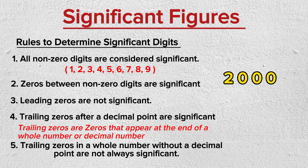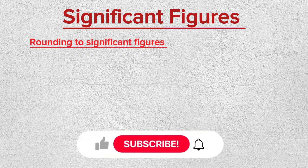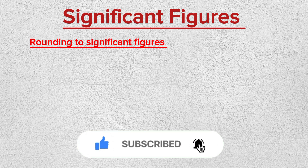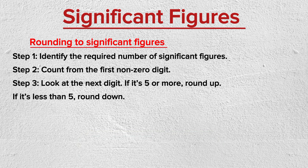Now that we know what significant figures are, let's learn how to round numbers to a specific number of significant figures. Follow these steps. Step 1: Identify the required number of significant figures. Step 2: Count from the first nonzero digit. Step 3: Look at the next digit — if it's five or more, round up; if it's less than five, round down.